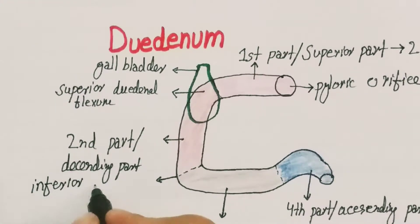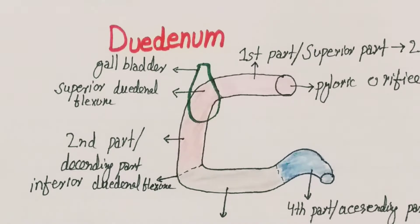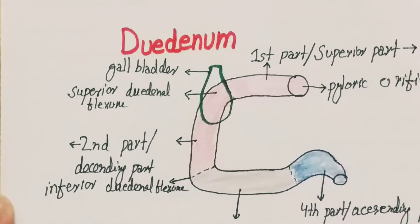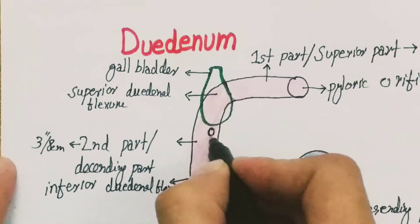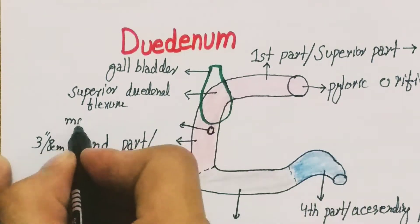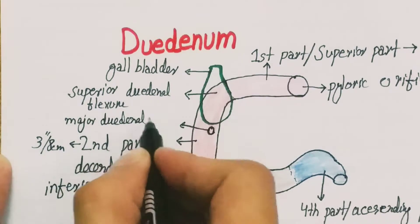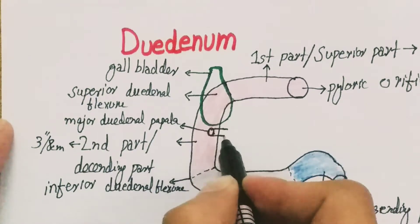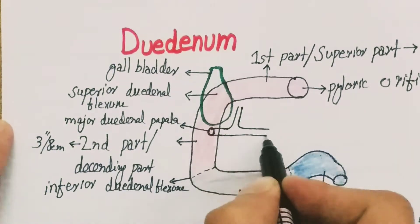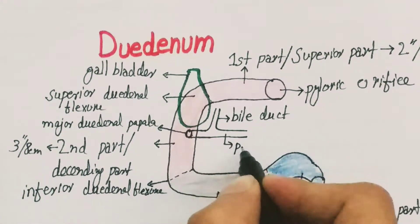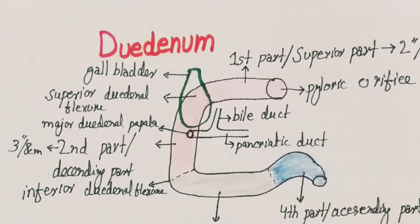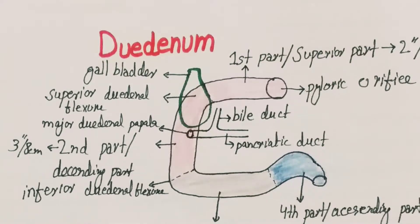The inferior limit of the second part of the duodenum is marked by the inferior duodenal flexure. The length of the second part is about three inches or eight centimeters. At the middle of the second part, we have a projection called the major duodenal papilla. The major duodenal papilla empties biliary products coming from the gallbladder via the bile duct, and pancreatic products through the pancreatic duct.